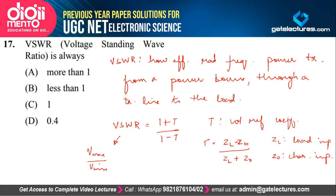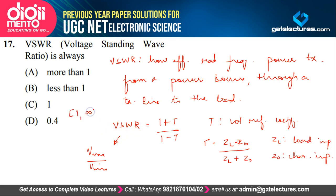If the transmission line is matched — meaning load impedance equals the characteristic impedance — then γ equals 0, and VSWR is minimum, equal to 1. In any other case, VSWR is always greater than 1. When γ becomes 1, VSWR becomes infinity. So the minimum value for VSWR is 1, and it ranges up to infinity.